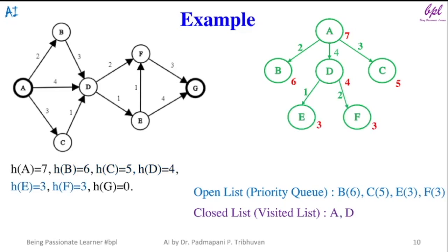After expansion, D will be added to closed list. D has two successors: node E and node F. These nodes will be added to open list along with their heuristic values. Both of these nodes have heuristic value 3.